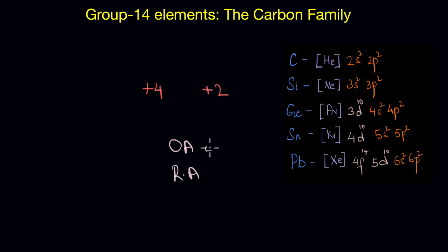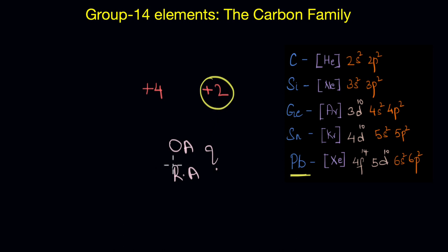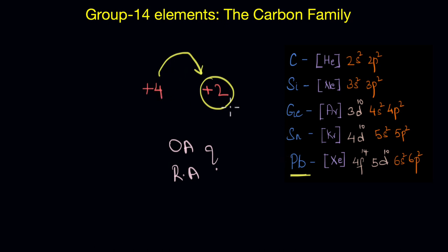For example, if you take lead, we know that lead is more stable in the plus 2 oxidation state rather than in plus 4, due to the inert pair effect. That means a compound of lead in the plus 4 oxidation state would want to move to the more stable plus 2 oxidation state, and in this process it would have to gain electrons — or act as an oxidizing agent.